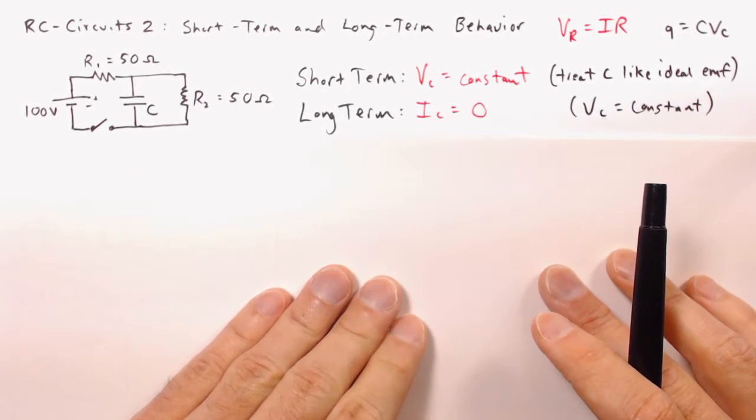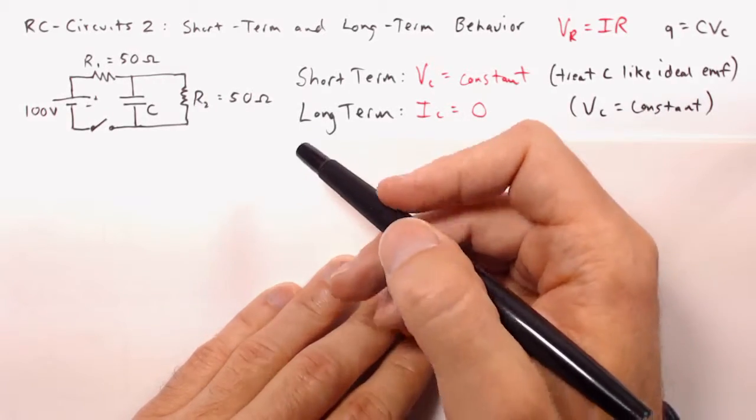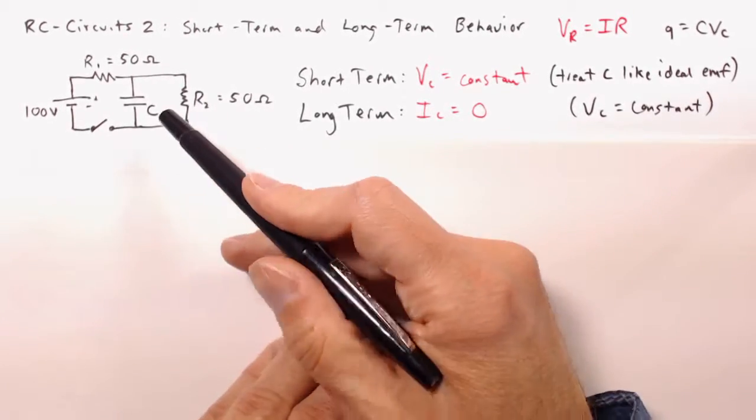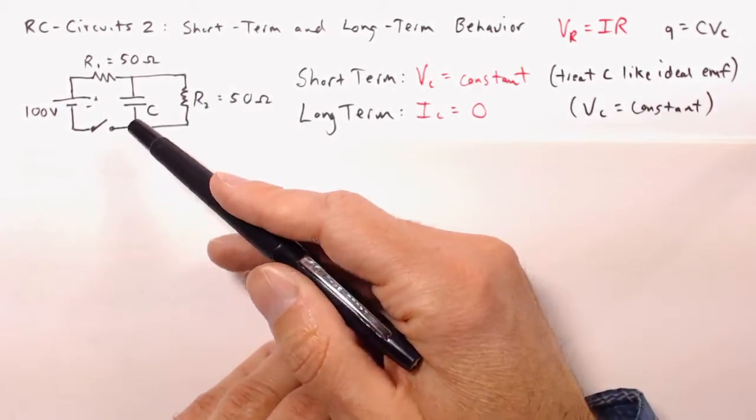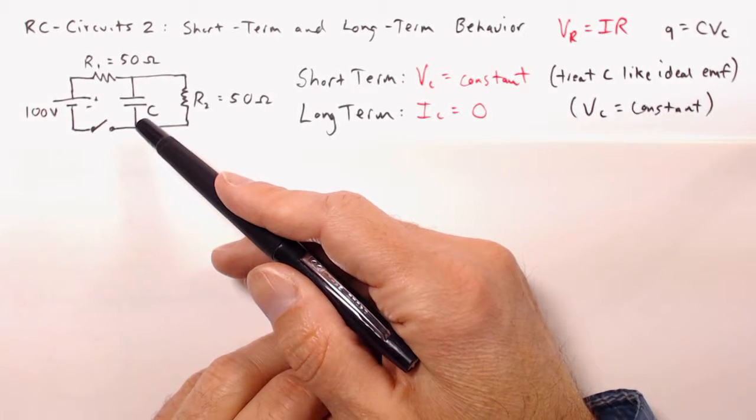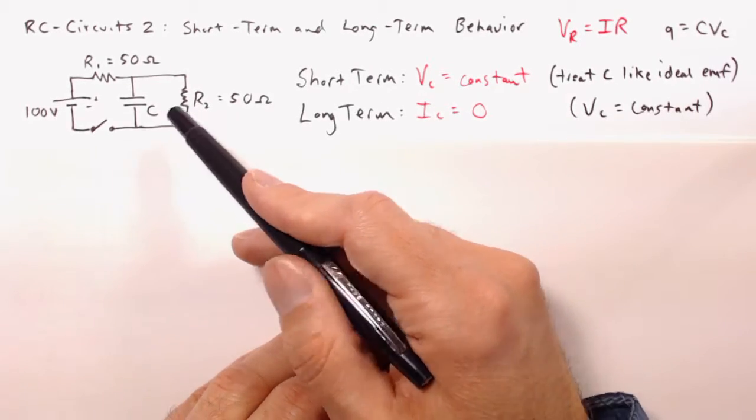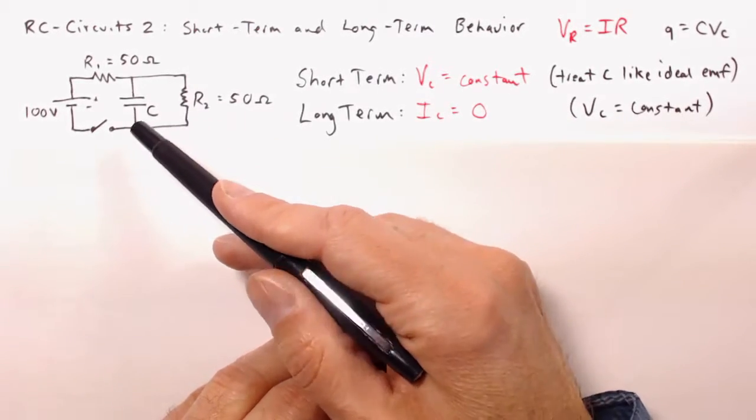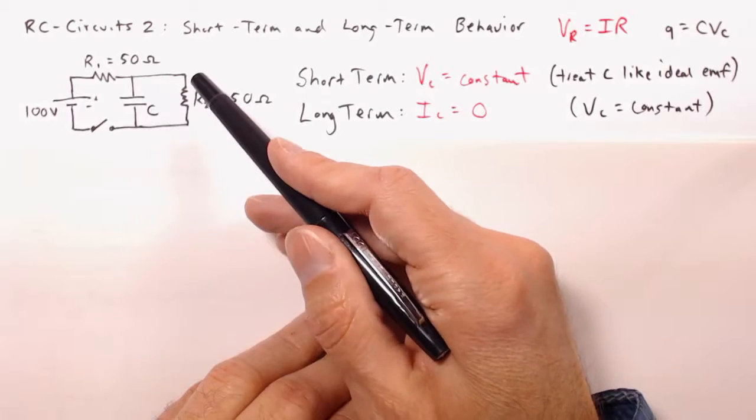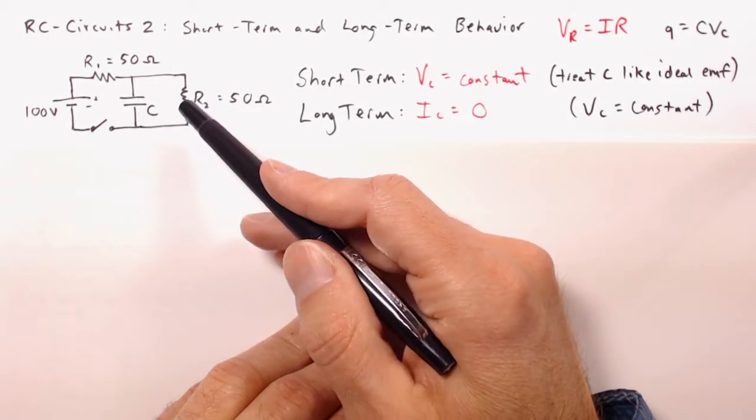What about long-term behavior? Well, by that, we mean a long time after any sort of change has occurred. It could be a couple of hours later, or realistically, a couple of seconds later. In the long-term, the circuit will settle down into some steady state where everything is constant. The voltage and everything is a constant, and the current through everything is a constant.